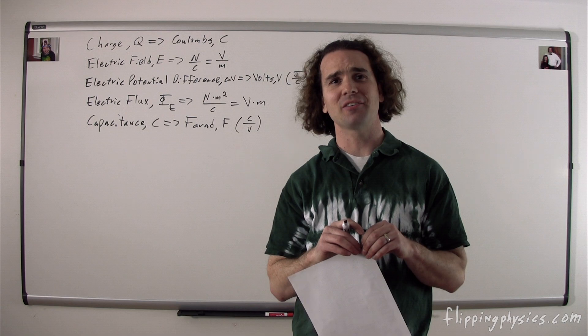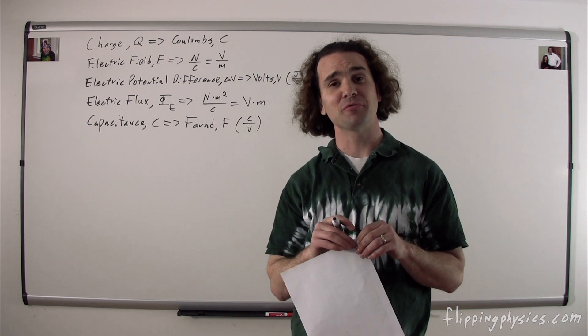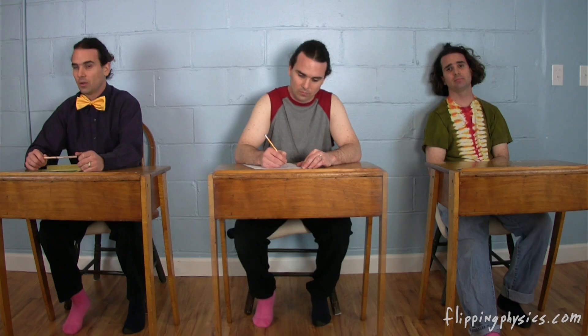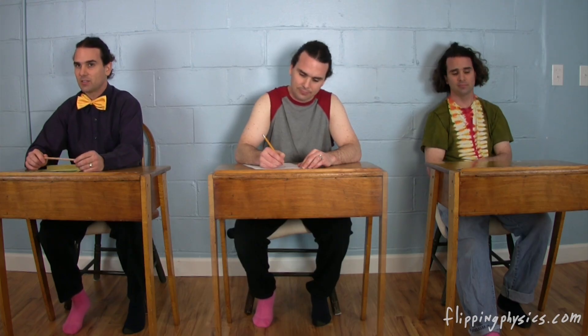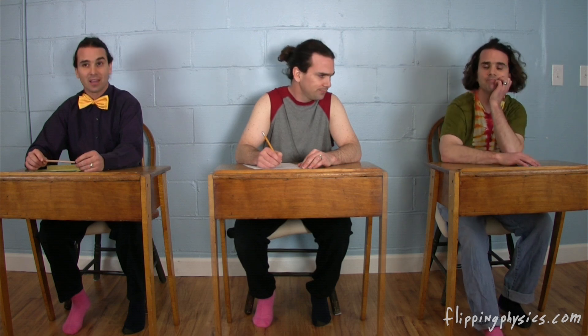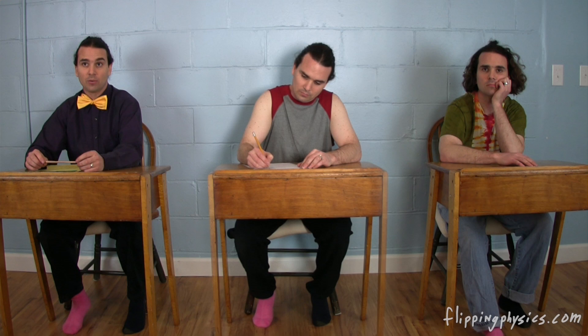Billy, what are the symbol and dimensions for current? The symbol for current is an uppercase I, and its dimensions are amperes, or amps, which is a coulomb per second. It is amperes which are the base SI dimension, and not coulombs.